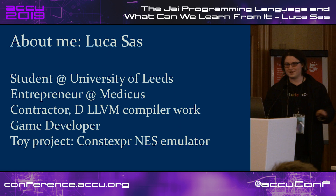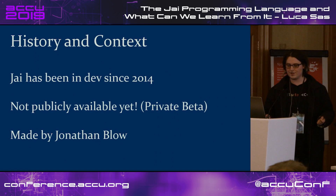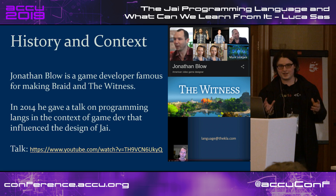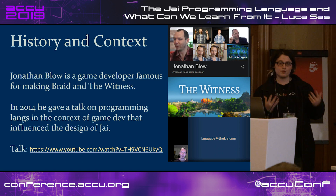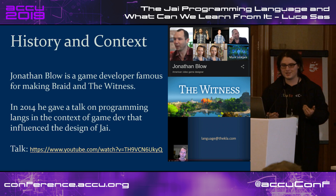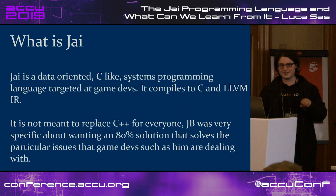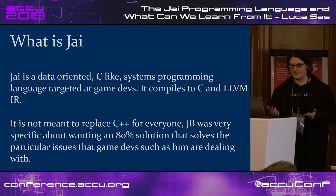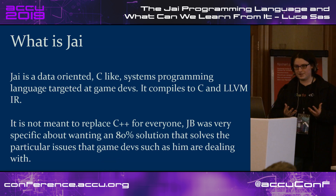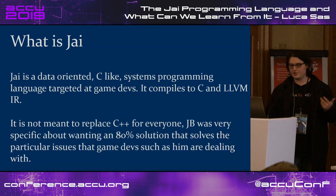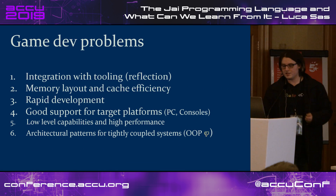Jai has been in development since 2014. It's not publicly available yet — it's in a private beta — and it's made by Jonathan Blow, a game developer famous for the indie games Braid and The Witness. In 2014 he gave a talk on ideas for programming languages for video games, was disgruntled with C++, and decided to make his own. Jai is a data-oriented, C-like systems programming language targeted specifically at game developers that compiles to both C and LLVM IR. Jonathan Blow was specific that he wants an 80% solution for game developers who code in a style similar to his.